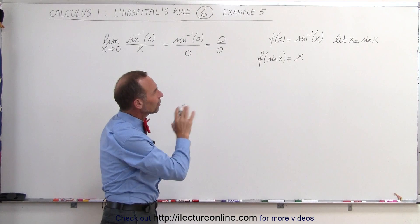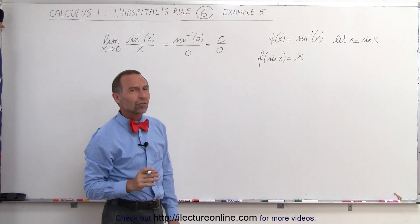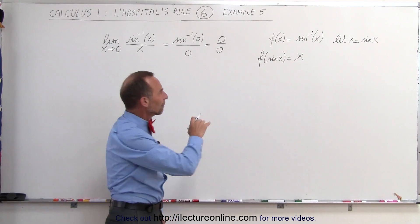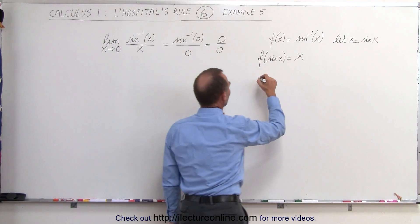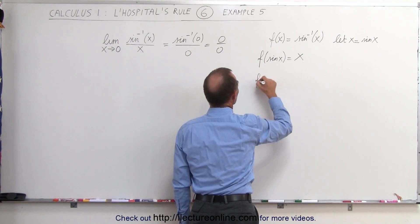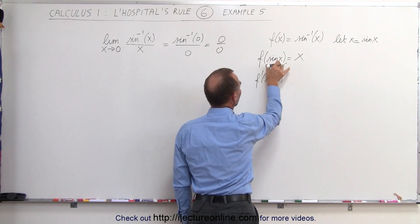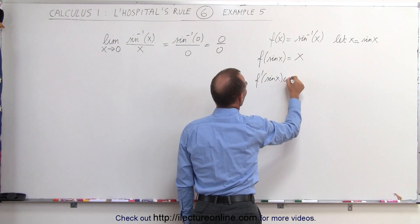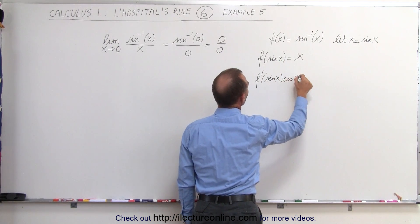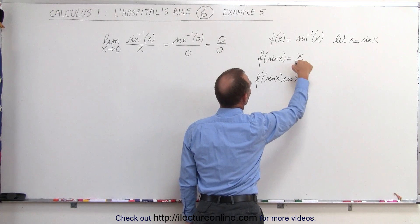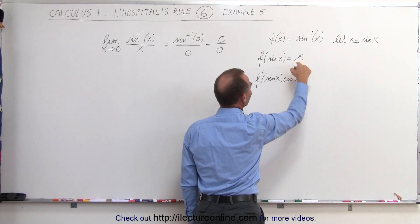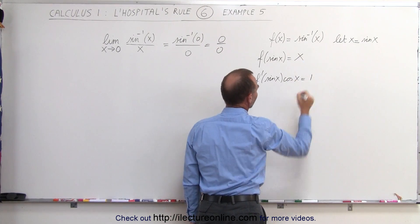Now we're going to take the derivative of both sides. Taking the derivative of the left side, we have f prime of sine of x times the derivative of the sine of x, which is the cosine of x, equals the derivative of the right side, which is 1.